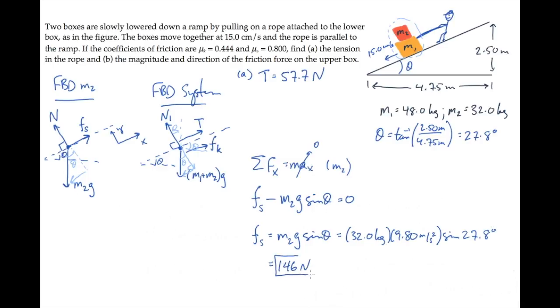finding that it equals 146 newtons. So that's the answer to part b: the magnitude is 146 newtons, and the direction is, as we've shown, up the ramp.